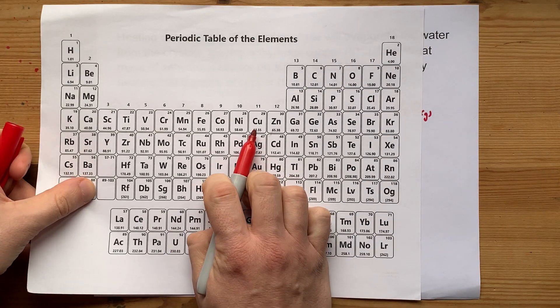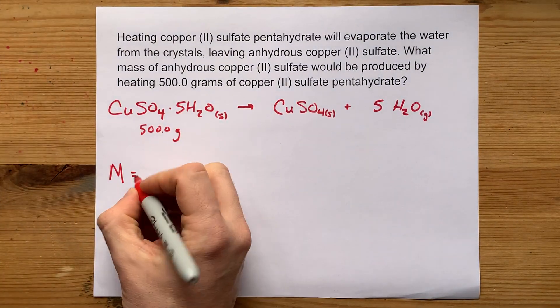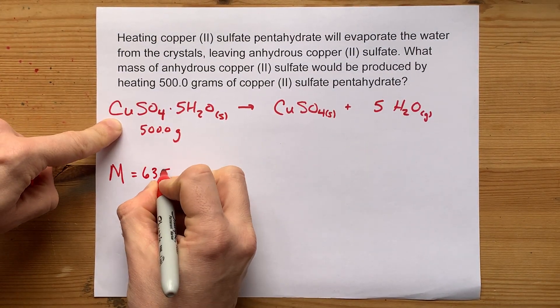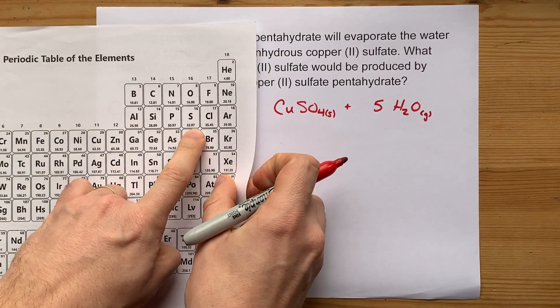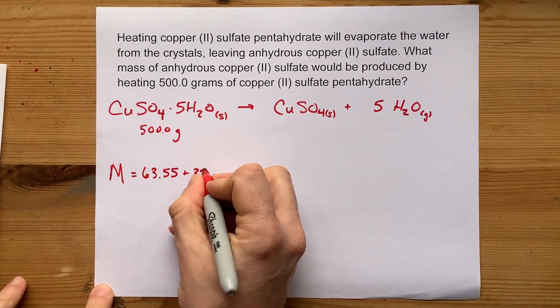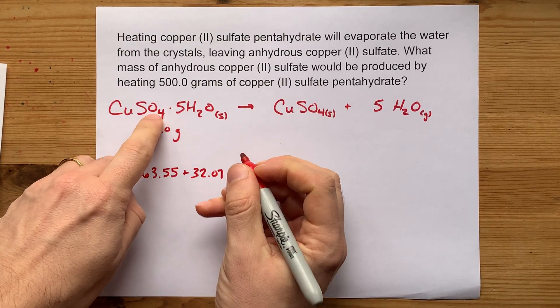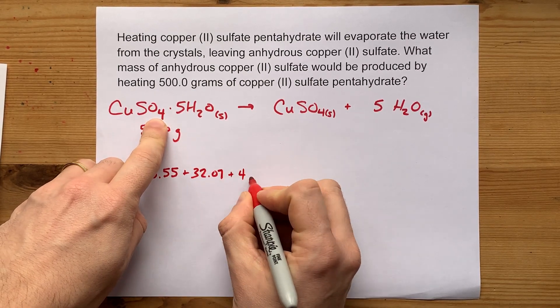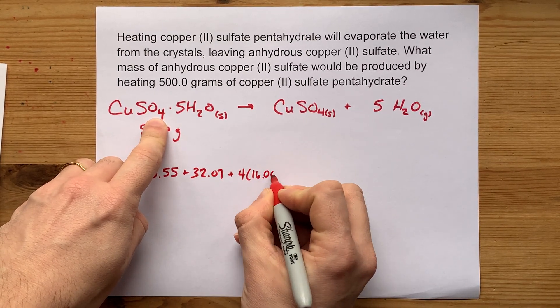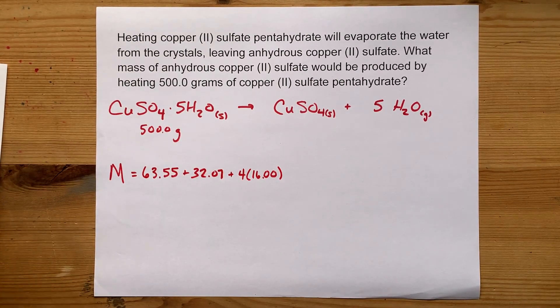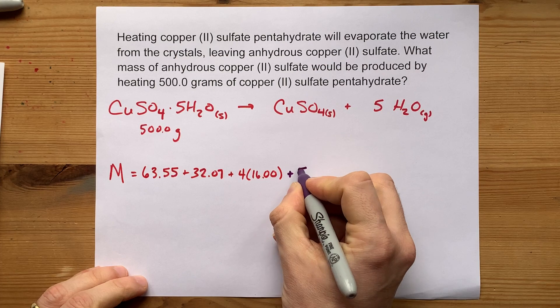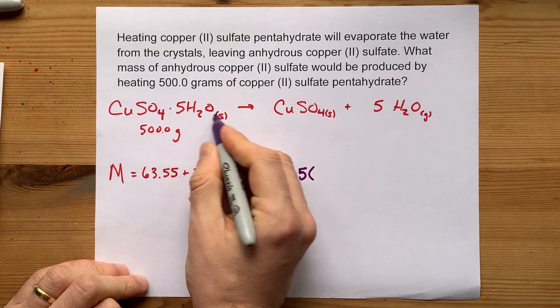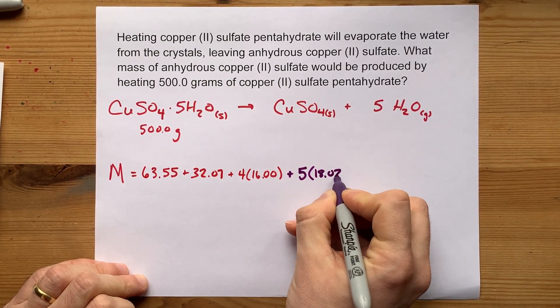Copper here contributes 63.55. The sulfur contributes 32.07. The O4 is four oxygens. Each of the oxygens is 16. And then, separately, we also have five waters. I'm going to do that in a different color. Each water weighs 18.02.